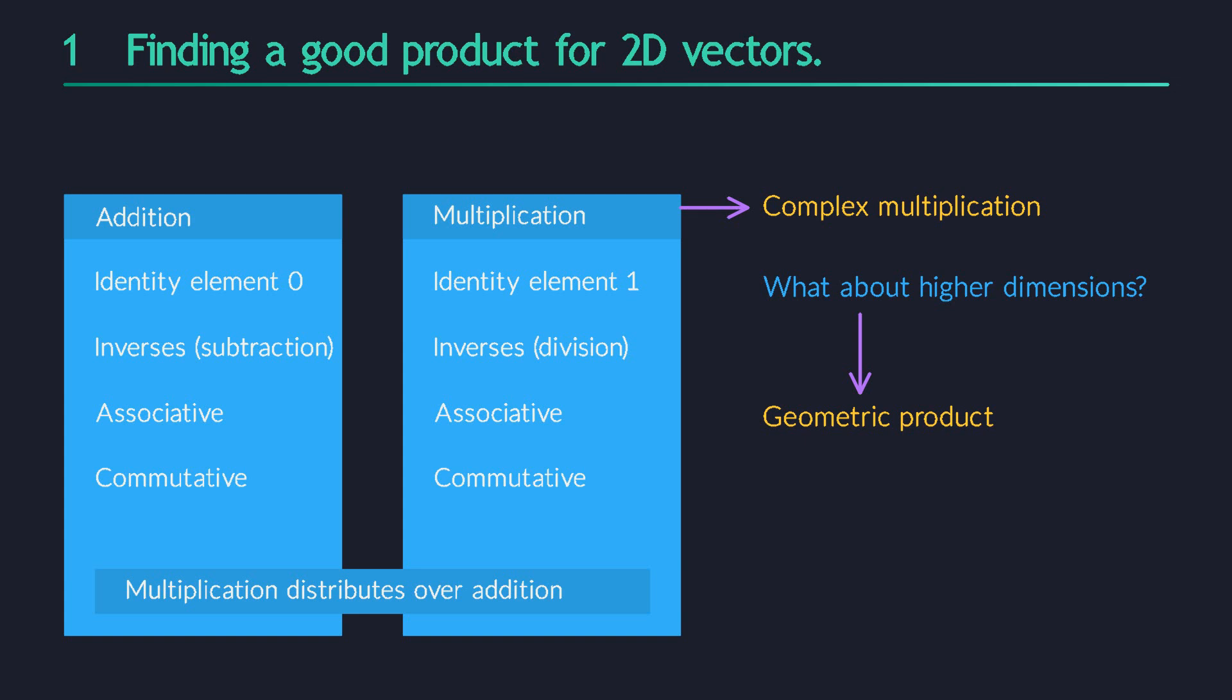Out of all the requirements we imposed on our product, the most difficult one by far was invertibility. We want each vector v to have an inverse, v to the minus one, so that when we multiply the two together, we get the neutral element, the real number one. Even though this is a very tall order, a demand that is very tricky to meet, we will still be able to find a solution.